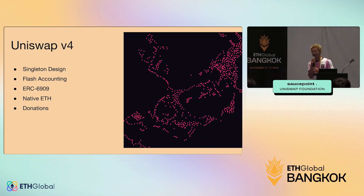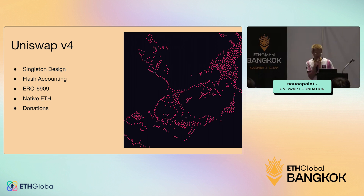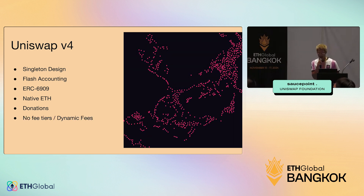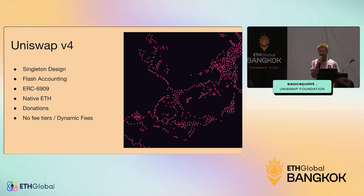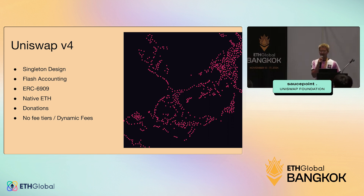There's also a new thing in v4 called donations, related to liquidity provision, where you can donate revenue to in-range LPs — it's a mechanism for value redistribution. V4 also supports all sorts of different fees like four basis points, 22 basis points, and dynamic fees, which allow developers to freely change the fee up or down.